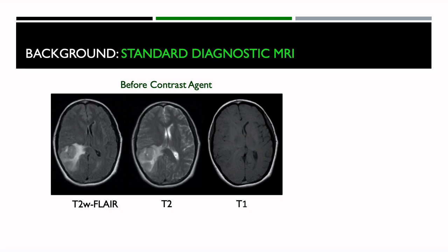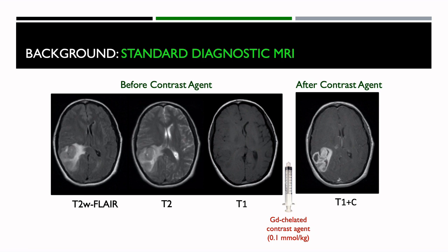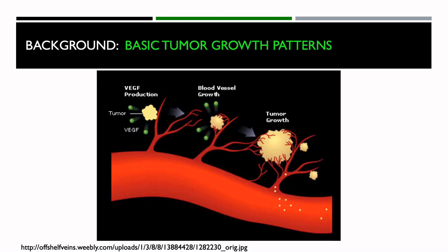For the standard diagnostic MRI, we get beautiful soft tissue contrast between the various tissue types in the brain, as shown by these various types of images that show either edema or swelling around the tumor, or bright signal from the ventricles. On this T1 image, you see what is considered to be a mass effect. Typically, contrast agent — a gadolinium chelated contrast agent — is then injected, after which you can clearly see where the lesion of concern is located. However, the standard information does not give you specific information about the basic tumor growth patterns.